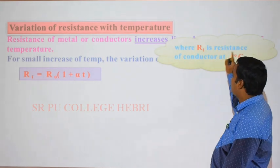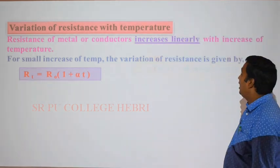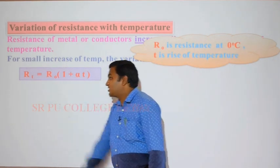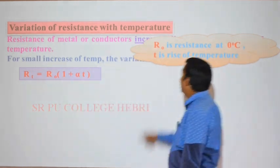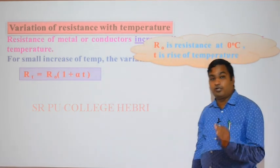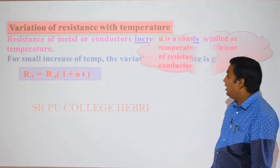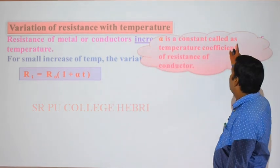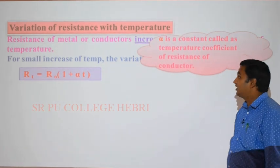In the equation RT equals R0(1 + αT): RT is the resistance of a conductor at T degrees Celsius, R0 is the resistance at 0 degrees Celsius, T is the rise of temperature, and alpha (α) is a constant called the temperature coefficient of resistance of the conductor.